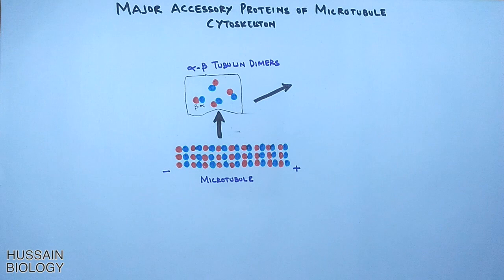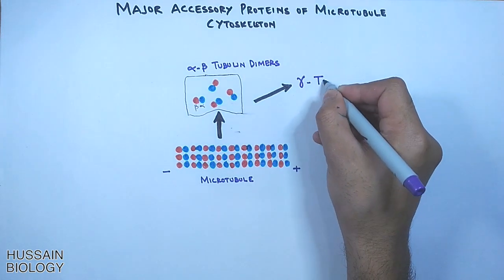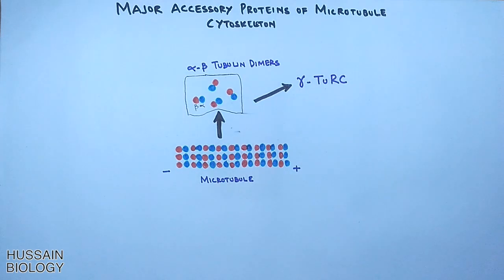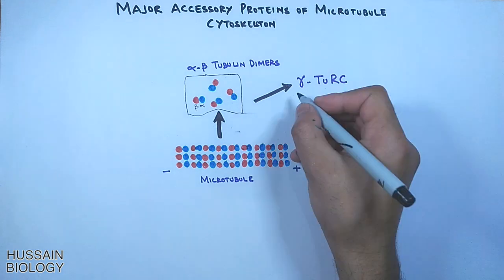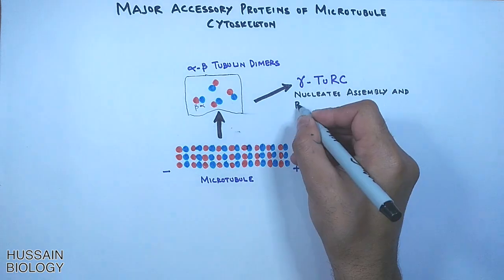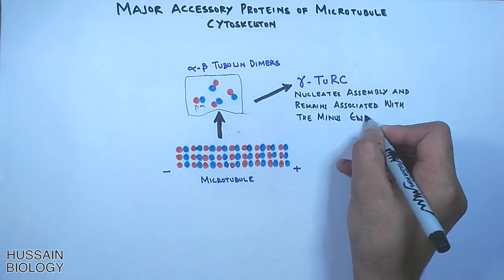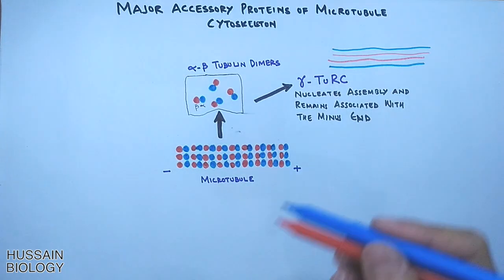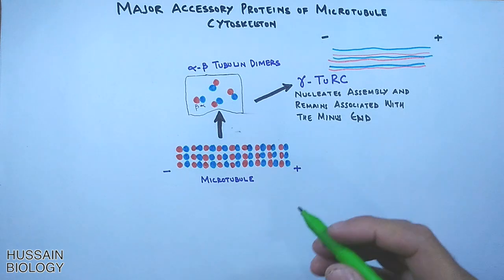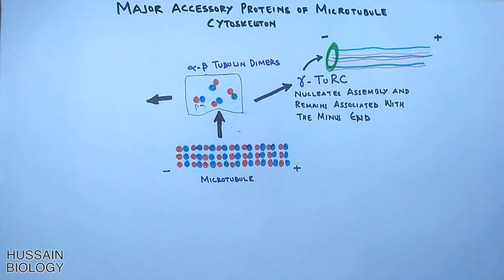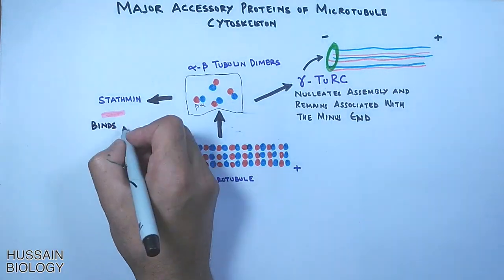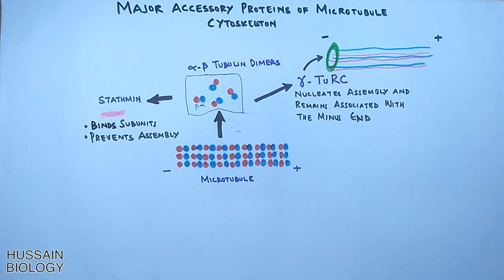The first major accessory protein in the microtubule cytoskeleton system is the γ-TuRC — an acronym for gamma tubulin ring complex. This complex protein nucleates assembly and remains associated with the minus end. As we can see in the diagram, the ring complex remains associated with the minus end.